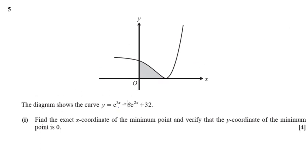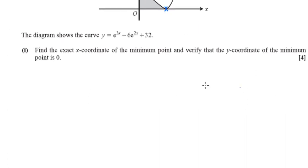Question 5 wants us to find this value of the minimum point here. So in order to do that, that's a stationary point. So we're going to differentiate and set the gradient function to be 0. So let's differentiate it first.